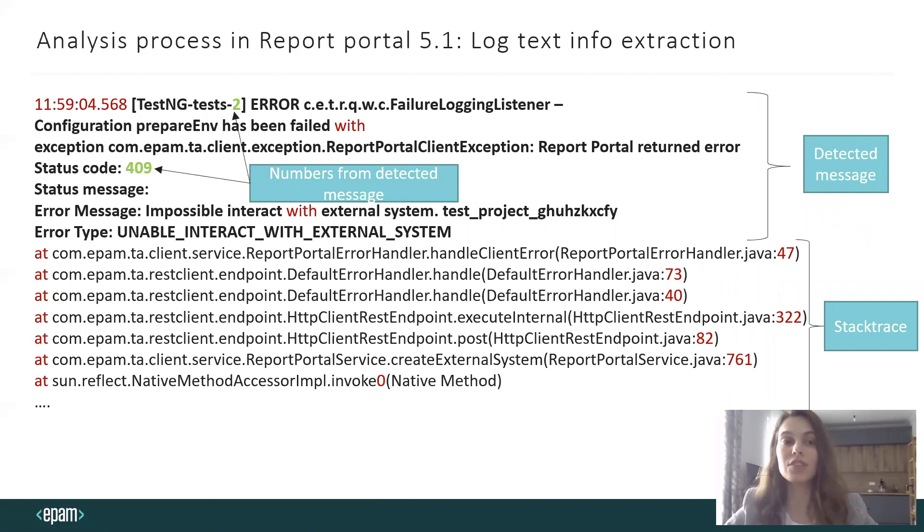Log text extraction now contains finding detected message and stack trace. We would like to have an opportunity to work with them separately. We are still removing stop words, starting date times, and numbers in the stack trace. But we would like not to lose information about the numbers in the detected message, so we are saving them separately.